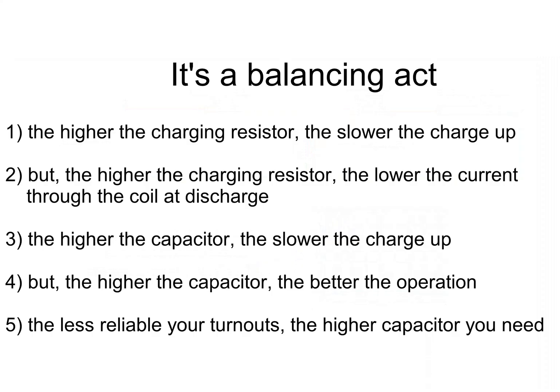So how do you determine the resistance and the capacitor value? It's a balancing act. The higher the charging resistor, the slower the charge up of the capacitor. But the higher the charging resistor, the less the current through the coil at discharge when the capacitor is finally discharged, so you limit the current through the coil which helps protect it. The higher the capacitor, the slower the charge up, but the higher the capacitor, the better the operation. This is most important when you have less reliable turnouts. If they're dirty then you might need a higher capacitor.